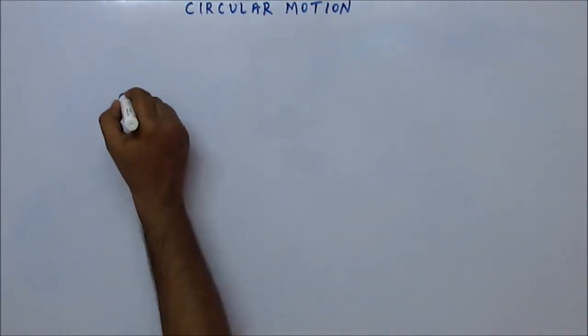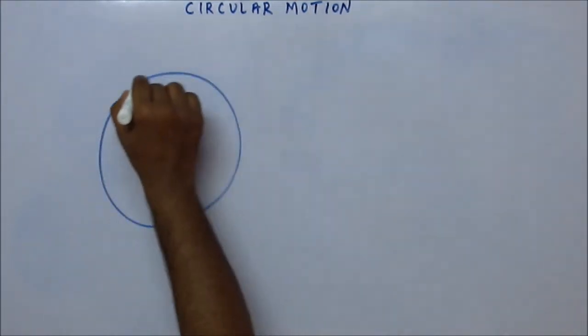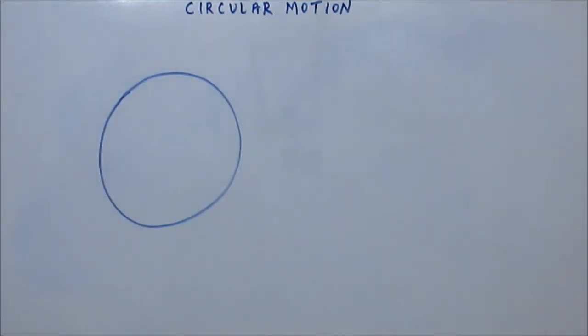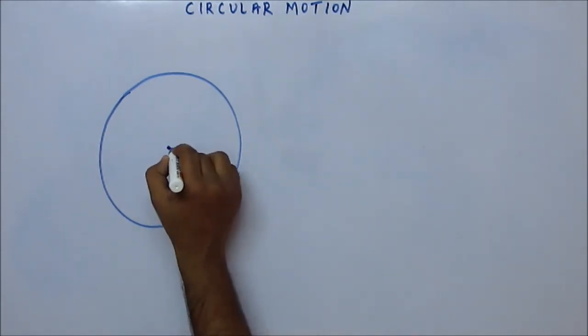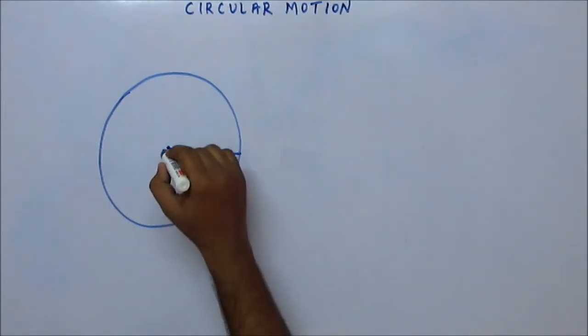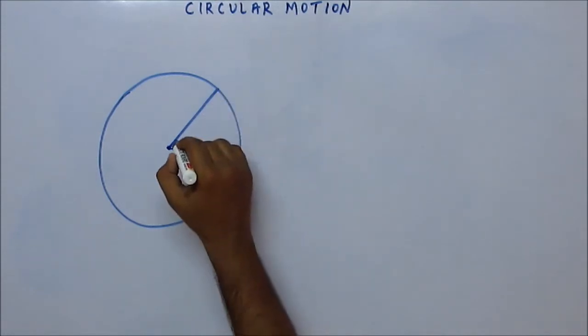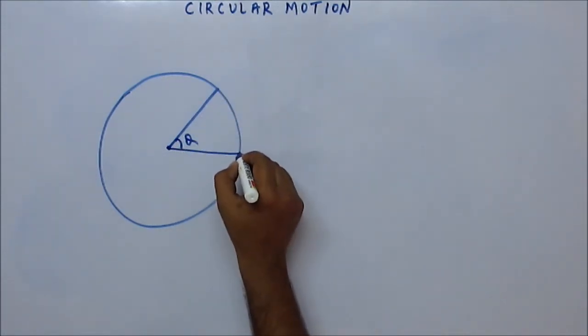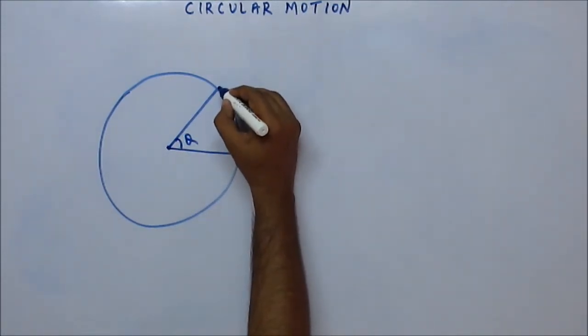So far you understand everything — no problem. There are four formulas we have studied and you should write them at least 10 times each on paper so that you really absorb them. Now we will do the same thing again — find centripetal acceleration, but using some math. The particle started from here and came here.